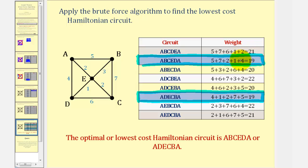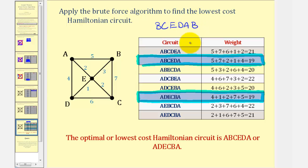We can't assume they're duplicate circuits just because they have the same weight. We can verify this by reversing the order: A, B, C, E, D, A is equivalent to A, D, E, C, B, A. So the lowest cost Hamiltonian circuit can be given either of these two ways. I also want to mention that if we didn't start with vertex A, we would have an equivalent circuit listed differently. For example, if we started with vertex B, we can list the same Hamiltonian circuit as B, C, E, D, A, B.